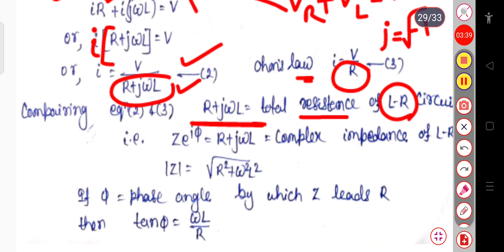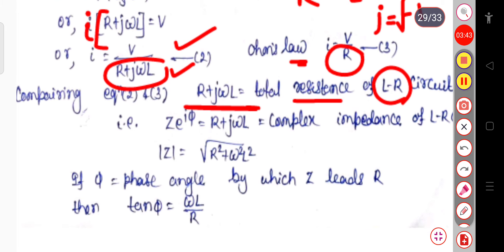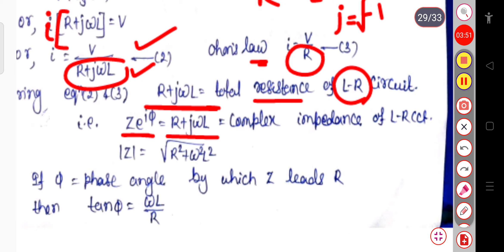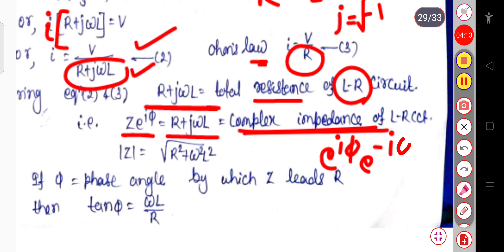This can be denoted as Z·e^(jφ), so Z·e^(jφ) = R + jωL, which is the complex impedance of the LR circuit. The magnitude of Z: since the complex conjugate of e^(jφ) is e^(-jφ), taking the modulus of e^(jφ) gives e^(jφ)·e^(-jφ) = 1.